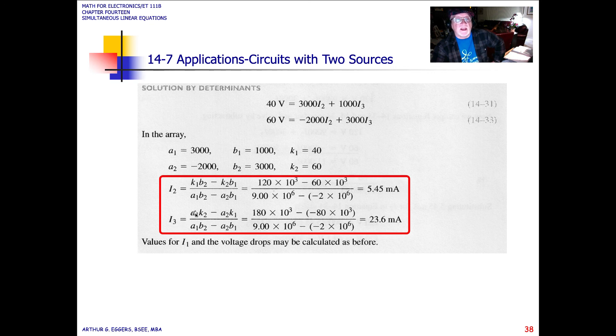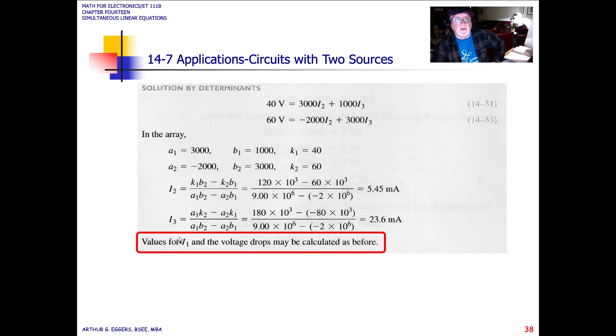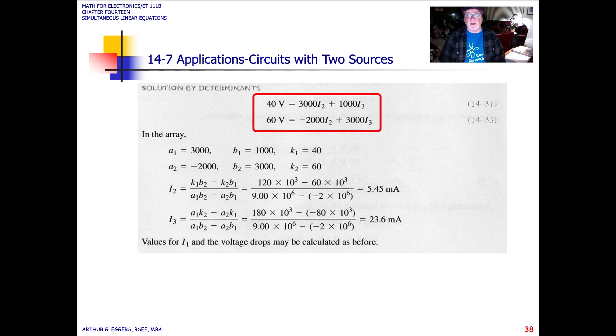And in I3, again, we do the determinant form, then we do the expansion. When we do the expansion, we end up with 23.6 milliamps. Values for I1 and the voltage drops then are calculated as before. So again, the other method, the third method that allowed us to solve based on the fact that we had our expressions already set up, made for an easy and quick solution. So you have to recognize that equations 31 and 33 are really the same equations that we used in the previous example.